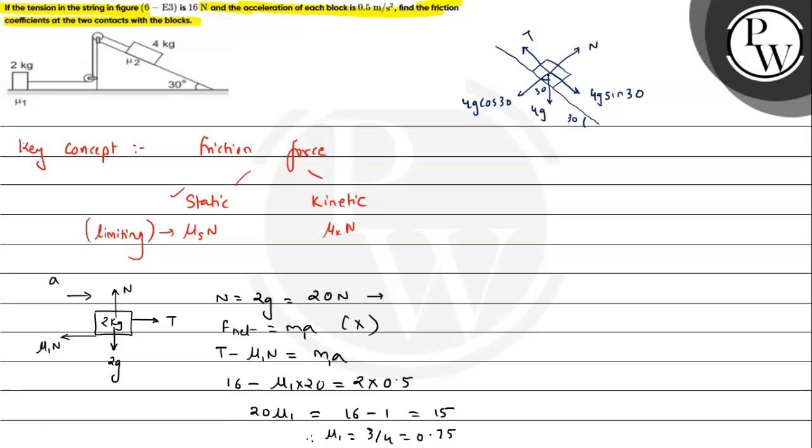There is tension upward, normal reaction from the surface, and friction force. Since this block is having a tendency to move in the downward direction, friction force is upward, and that is given with expression μ2 into N.